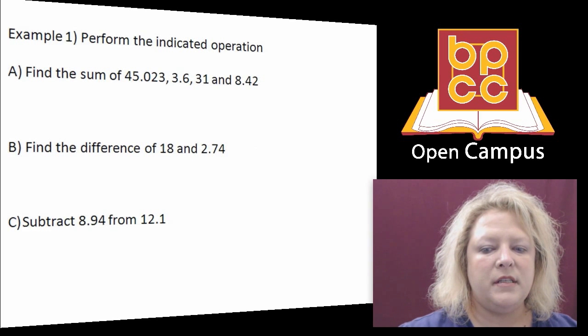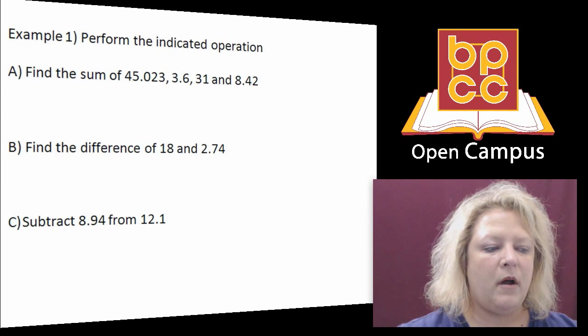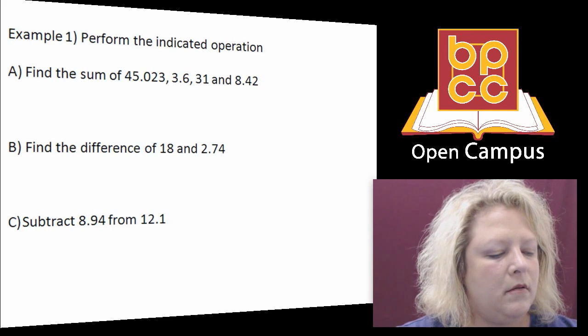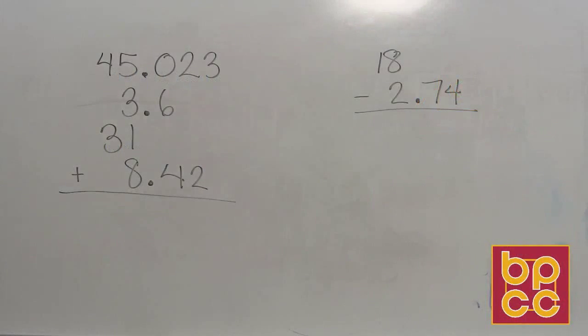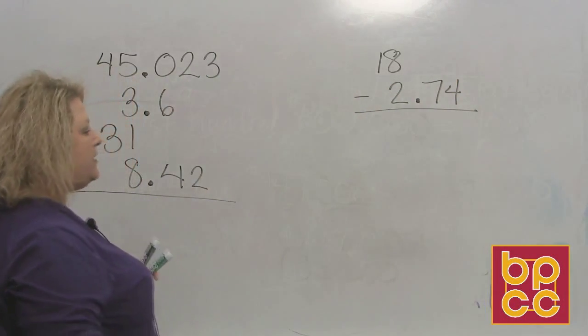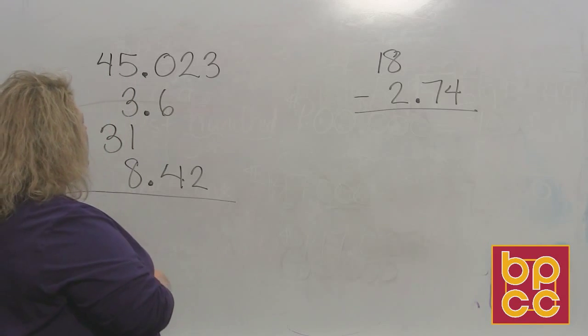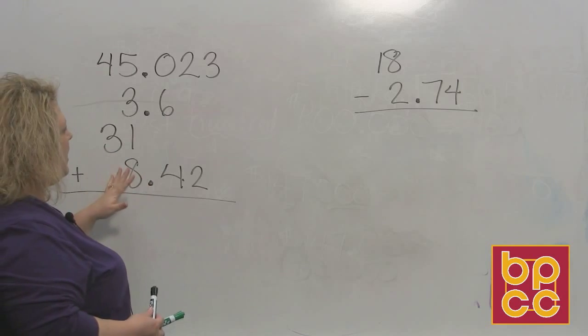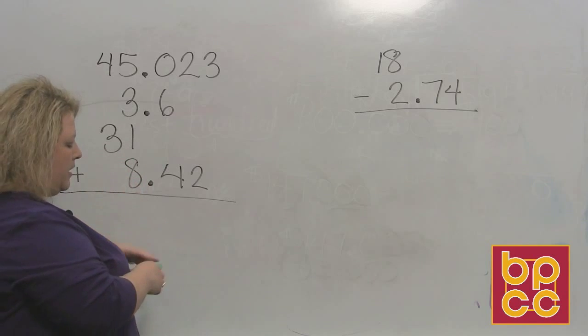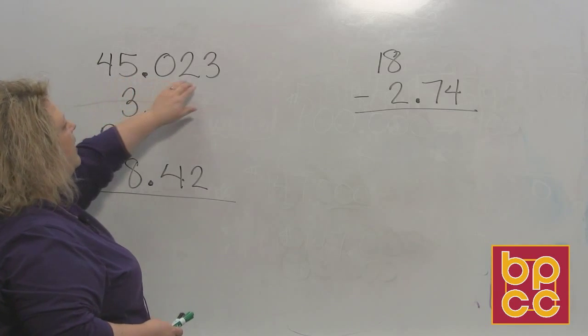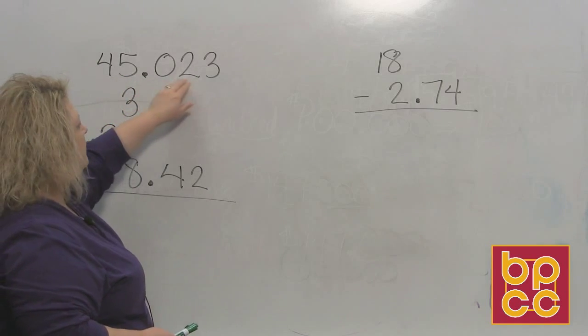So what we're fixing to do is I'm going to work a couple of these problems on the board for us. And the first one I'm going to do is an addition problem. OK, and notice I have the numbers and they're all not they are lined up correctly. But I did this on purpose so that you could see what happens when you have forty five and twenty three thousandths.